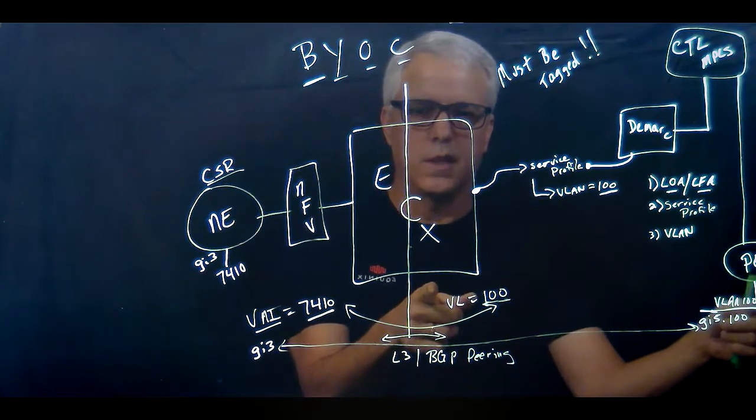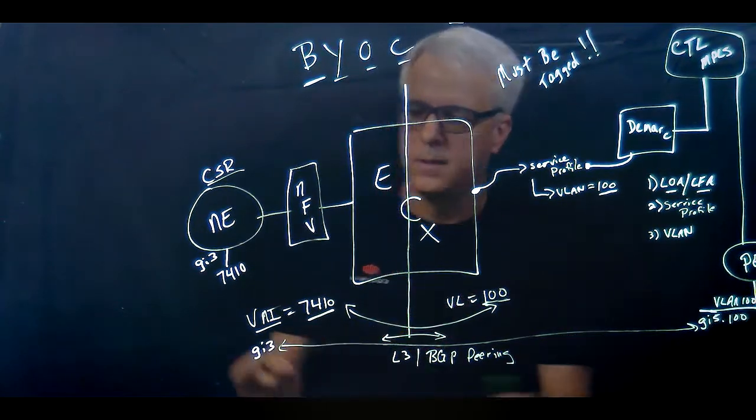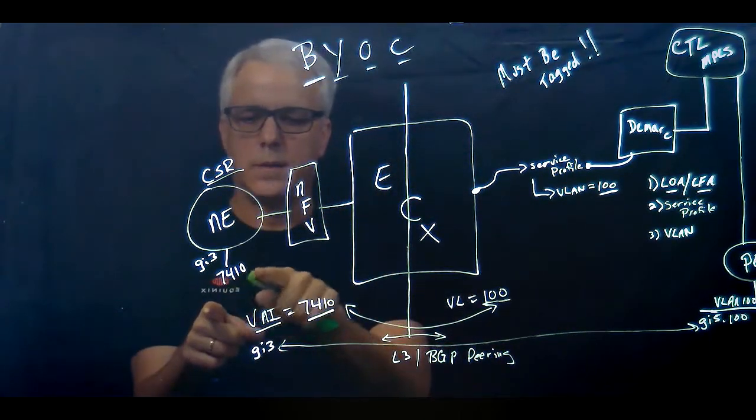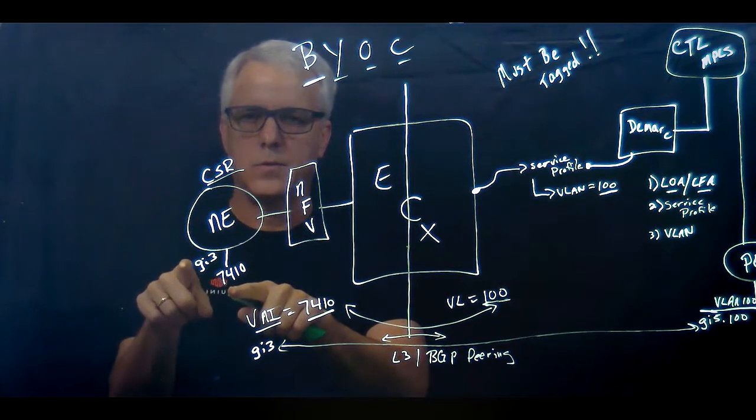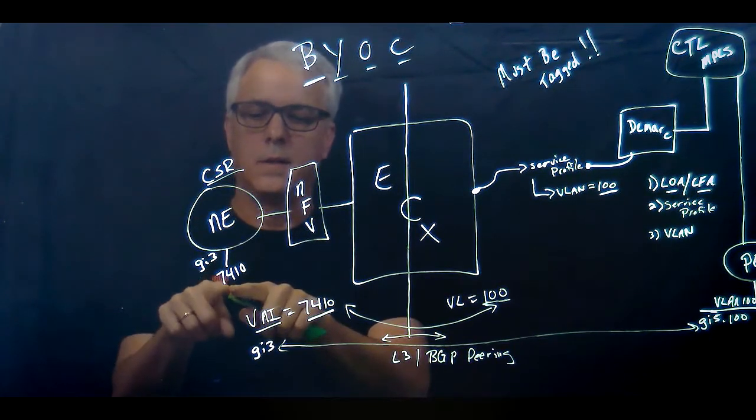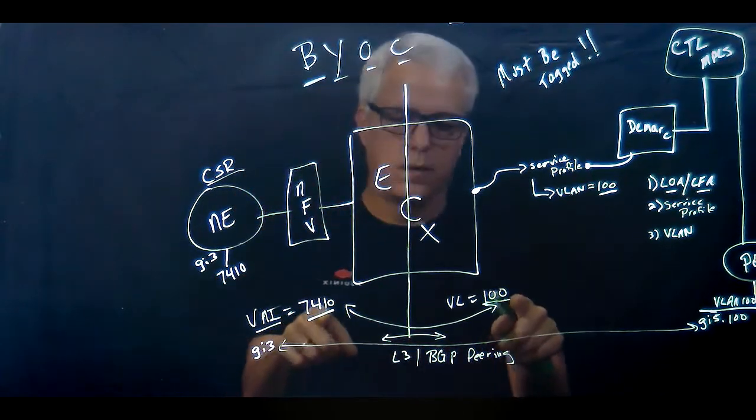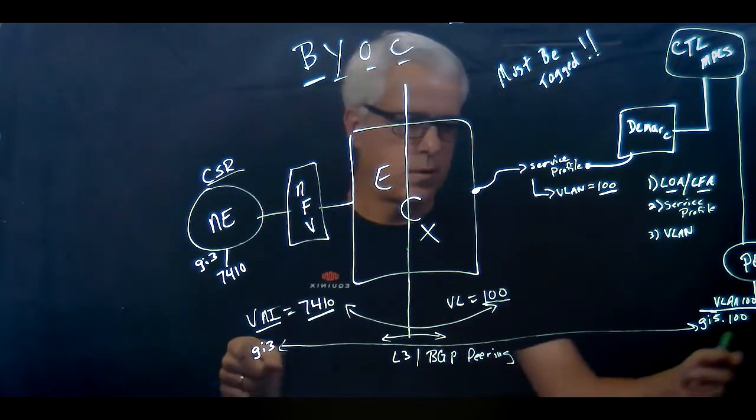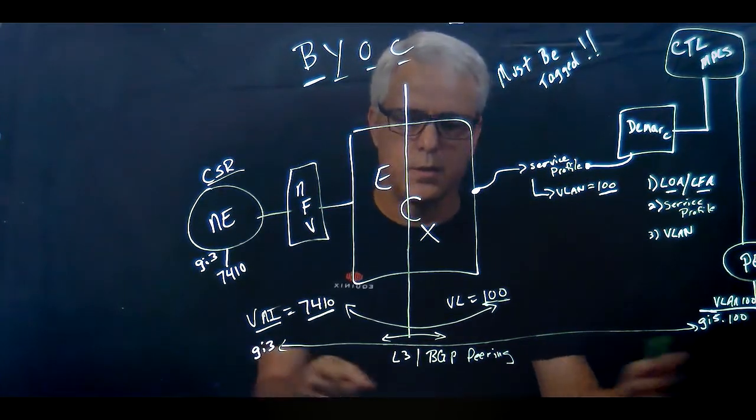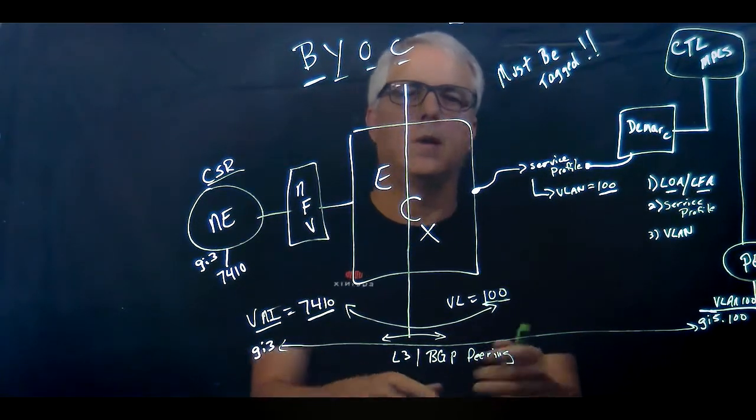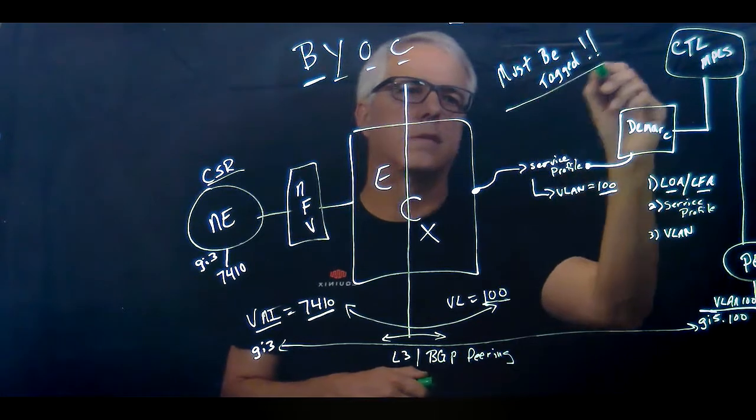On this side, VNI gets assigned to an interface—in this case 7410 got assigned to gig 3. 7410 and 100 translate back and forth—I've built the layer 2 underlay. Once layer 2 underlay's built, I can build layer 3 and BGP peering.